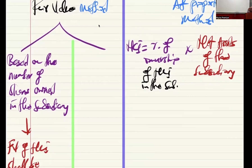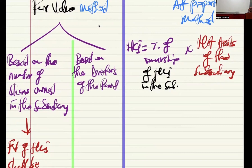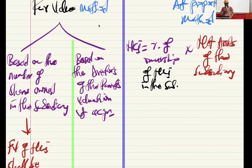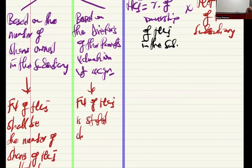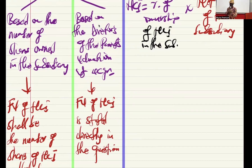The last fair value approach is based on the directors' valuation at acquisition — that will be given directly in the question. You don't need to do any workings; you just pick the figure and run with it. So the fair value of NCI is stated directly in the question.